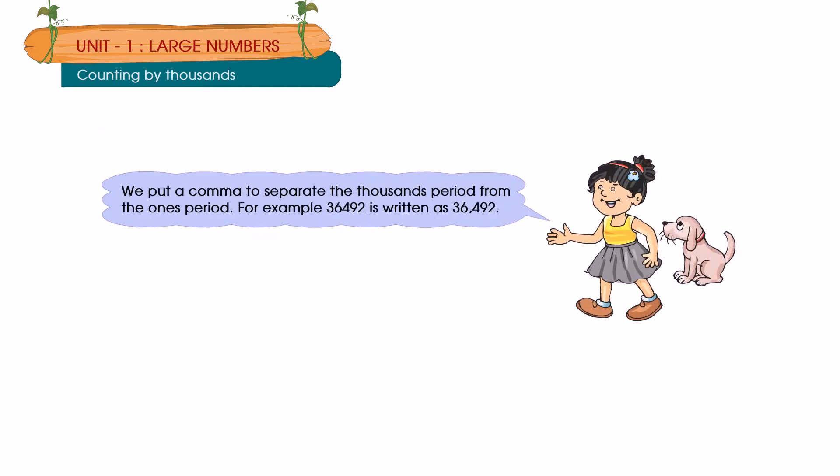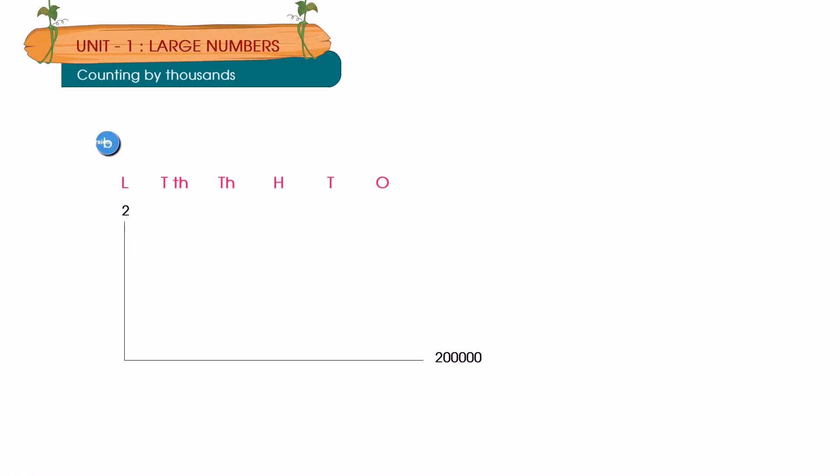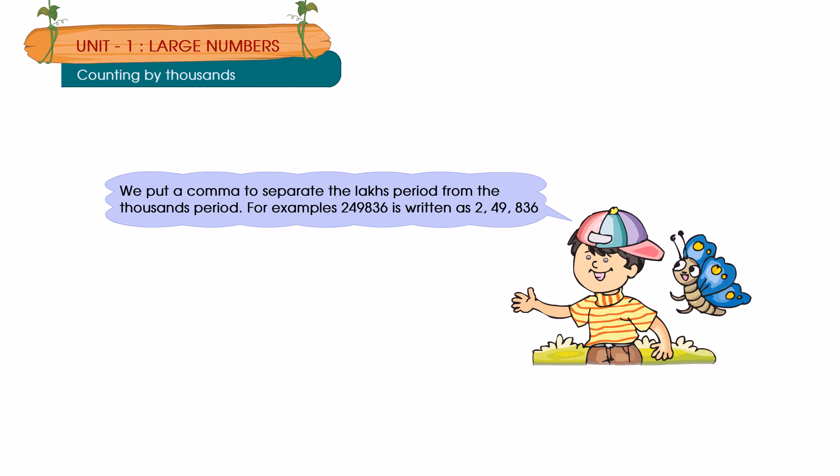We put a comma to separate the thousand period from the ones period. For example, 36,492 is written as 36,492. We put a comma to separate the lakhs period from the thousand periods. For example, 2,49,836 is written as 2,49,836.